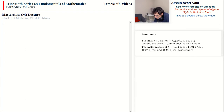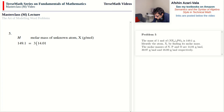Problem 5: the mass of one mole of (NX₄)₃PO₄ is 149.1 g. Molar masses of N, P, and O are 14.01, 30.97, and 16 g/mol. With M representing the molar mass of X: 149.1 = 3(14.01 + 4M) + 30.97 + 4(16). Total mass equals mass of three groups of NX₄ plus one P atom plus four O atoms.